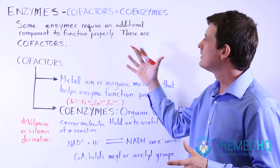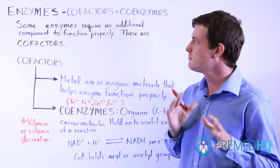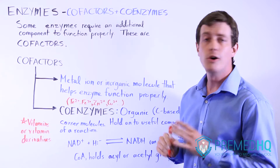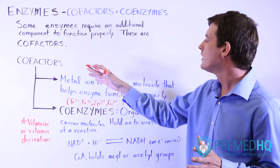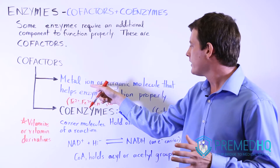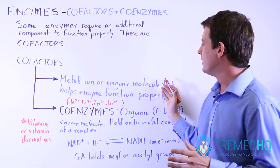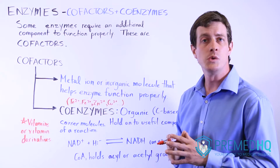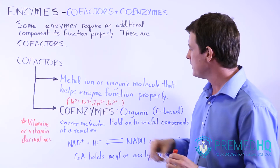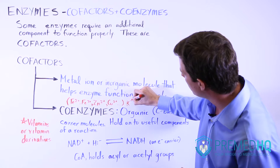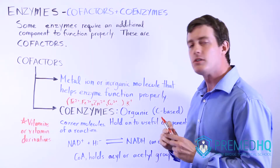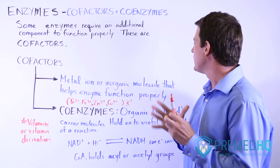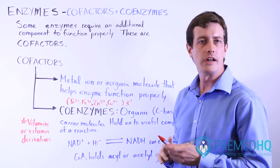Some enzymes require additional components in order to function properly, and these are known as cofactors. Cofactors come in two different flavors. Pure cofactors are metal ions or inorganic molecules that help an enzyme function properly — for example, iron ions used with hemoglobin, zinc, copper, or something like a K+ or other alkali metal cations. They are usually metal ions or some inorganic molecule.